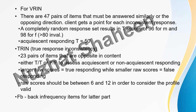VRIN consists of 47 pairs of items that must be answered similarly or in the opposing direction. For example, if item 4 says 'I like spending time with my mother' and a person says true, then a paired item like 'I do not like spending time with my mother at all' should be answered false. If both are answered the same way, this inconsistency is detected by VRIN.